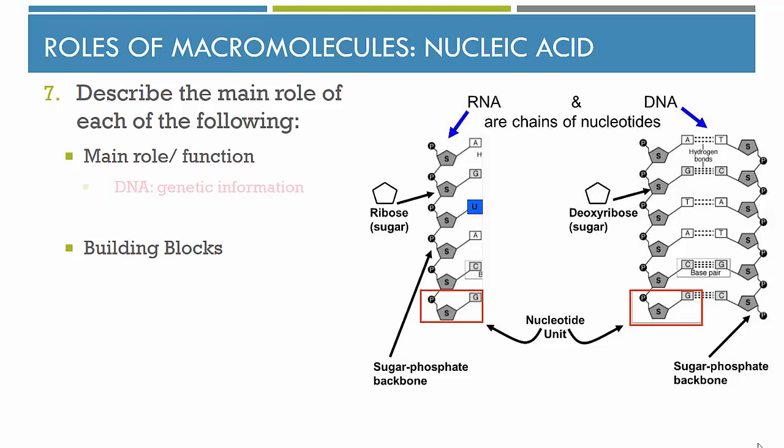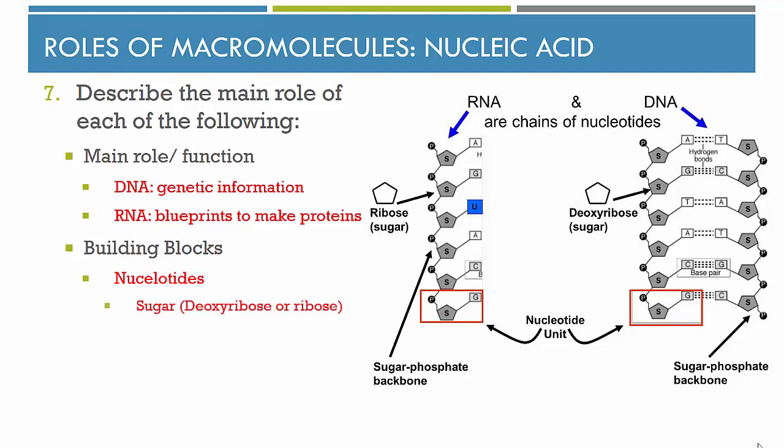Next we have nucleic acid. DNA is responsible for our genetic information. RNA is used as a blueprint to give the cell instructions on how to make proteins. The building blocks of nucleic acid are nucleotides, which are made up of a sugar — either deoxyribose in DNA or ribose in RNA — a phosphate group, and a base. In DNA the bases are A, T, G, and C; in RNA they are A, U, G, and C. The phosphate and sugar form the backbone along which the bases are attached. DNA has deoxyribose sugar and is double-stranded. RNA has ribose sugar and is single-stranded. Note that RNA has U where DNA has T.